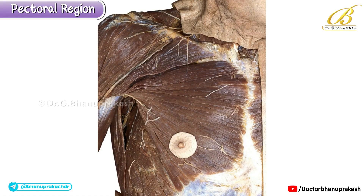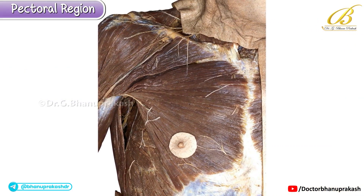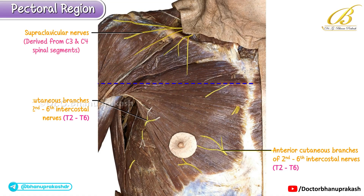Both the superficial and deep fascia have been carefully removed to display the muscles along with the cutaneous nerves and vessels. The skin above a horizontal line drawn at the level of the sternal angle receives its sensory supply from the supraclavicular nerves, derived from C3 and C4 spinal segments. In contrast, the skin below this line is innervated by the anterior and lateral cutaneous branches of the second to sixth intercostal nerves, T2 to T6.